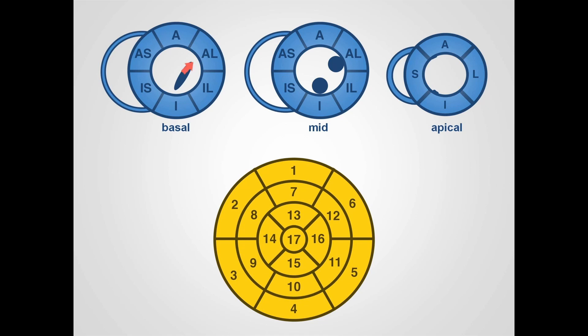Basally, we have the mitral valve orifice represented here, and we have six segments of the left ventricle: the anterior, anterolateral, inferolateral, inferior, inferoseptal and anteroseptal segments. We define the septal segments in relation to the position of the right ventricular free wall.